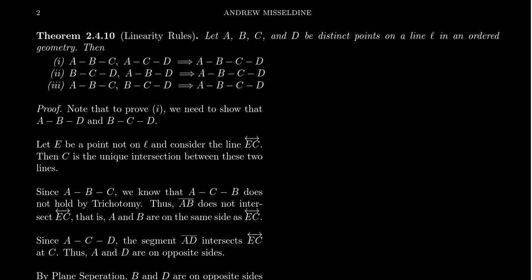In this video, we're going to continue our development of the ordered structure — the betweenness structure of a geometry, assuming the four betweenness axioms of Hilbert. In particular, we're going to prove the so-called linearity rules, which give us a way of extending betweenness relationships of points on a line to other betweenness relationships.